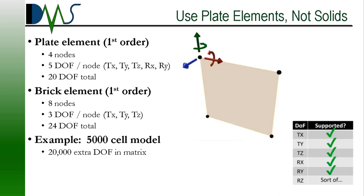Do not model everything as solid elements. Most of a ship's structures can actually be modeled with FEA plate elements. These are 2D surface elements that require far less computational effort than a 3D solid. Unlike simple 2D shell elements, plate elements also recognize rotational degrees of freedom for the nodes. This allows you to model plate bending, which is a key element for ship structure. Compare a first-order plate element to a first-order solid element — a brick element hexahedral. The plate element has 20 degrees of freedom total, whereas the brick element has 24 degrees of freedom total.